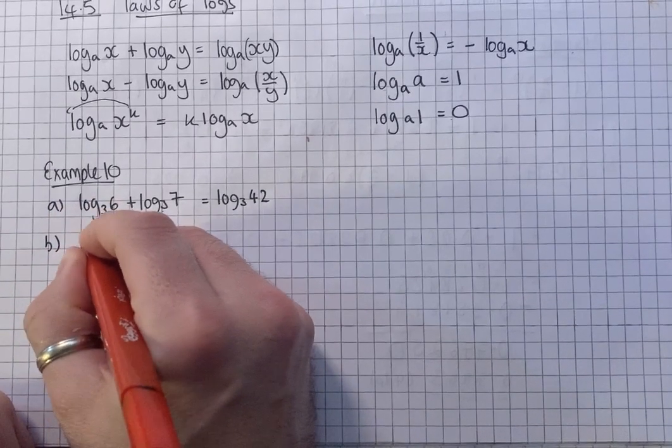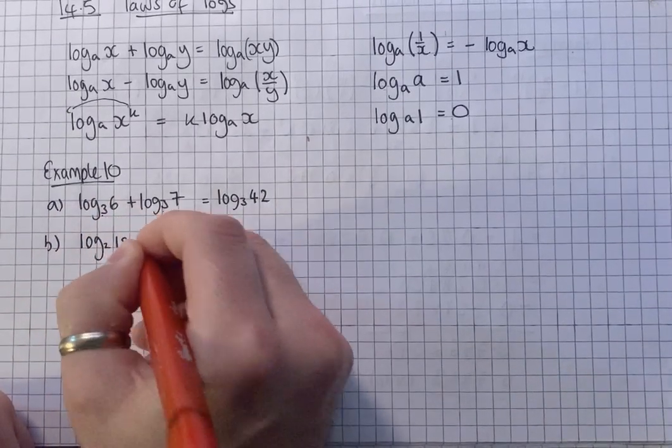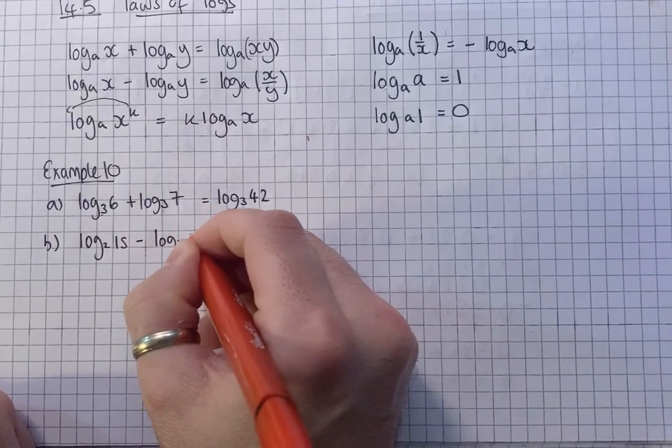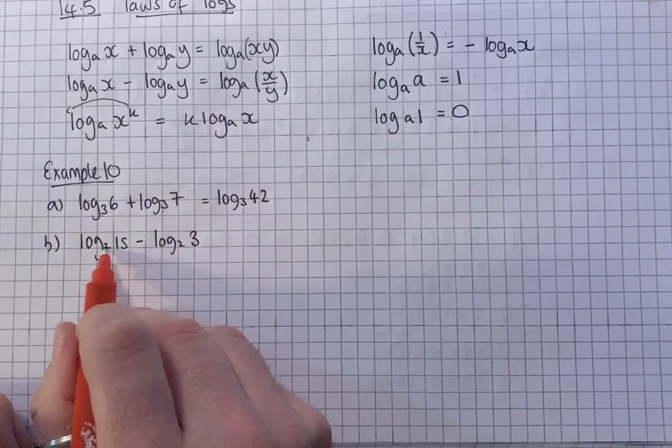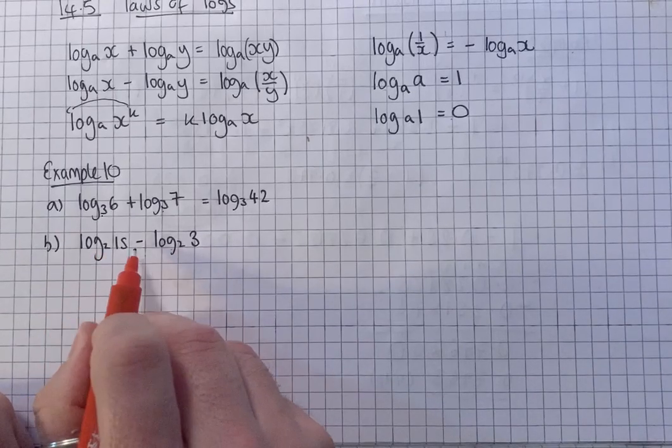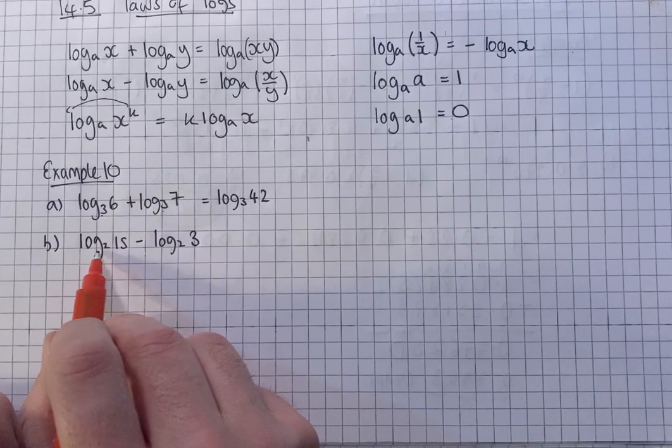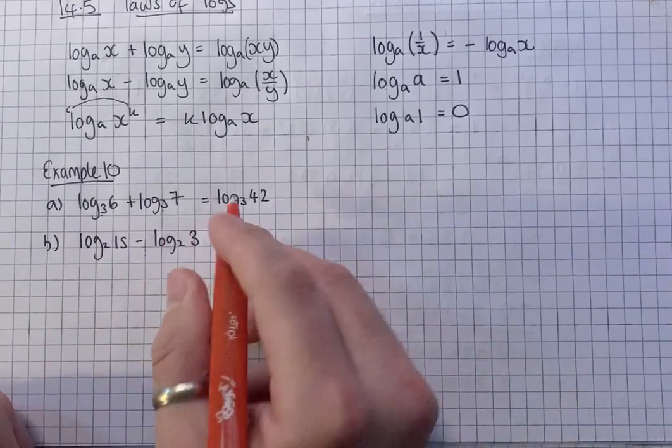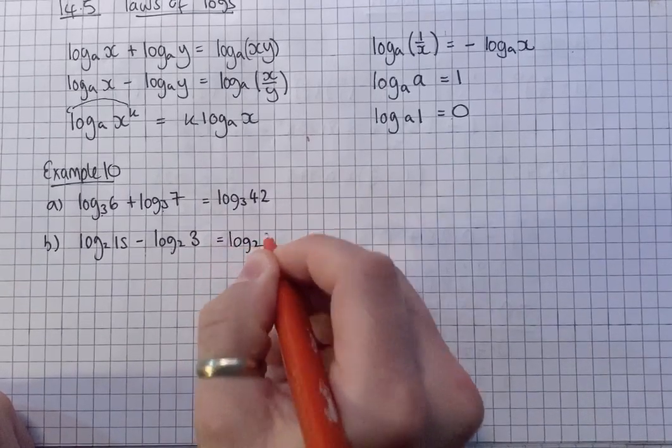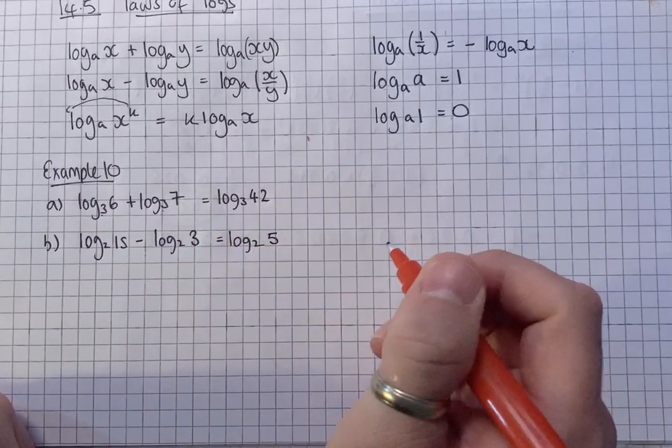B, log to the base 2 of 15, minus log to the base 2 of 3. Got the same base, we can use a log rule. When you subtract, you divide. So it's going to be log to the base 2 of 15 over 3, which is 5.